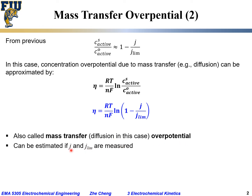This overpotential due to concentration gradient or mass transport can be estimated if you know the actual current density and the limiting current density. If both values are known, we can estimate the mass transfer overpotential or concentration overpotential. Of course, we are still assuming that ion migration — the motion of charged species under an electrical field — is negligible compared with mass transport through diffusion.